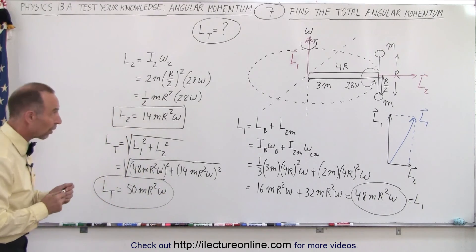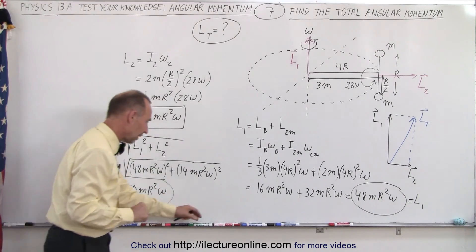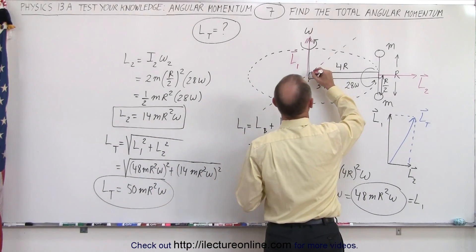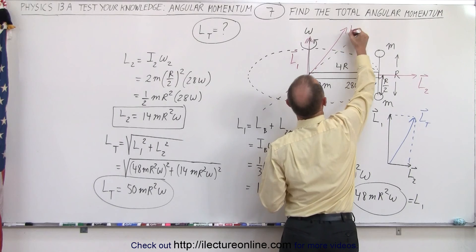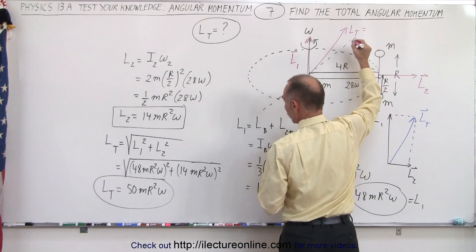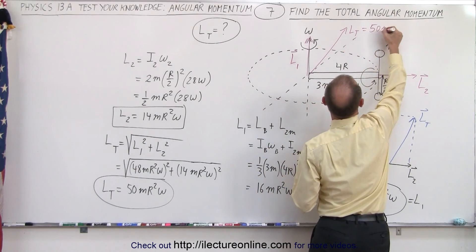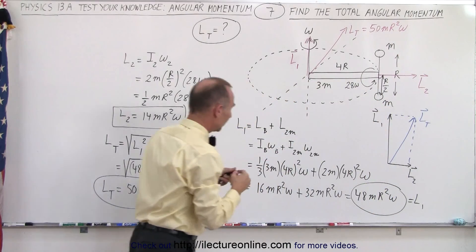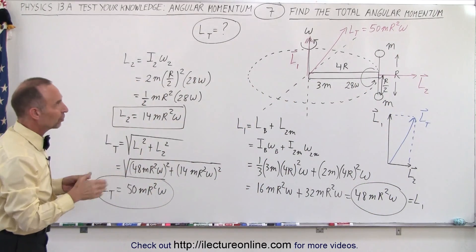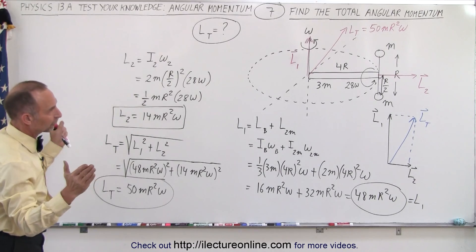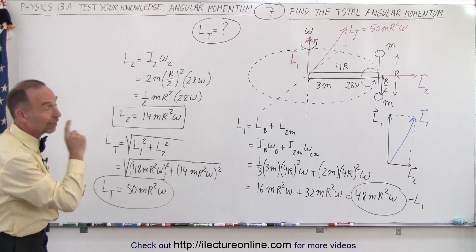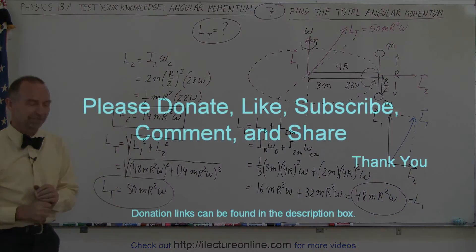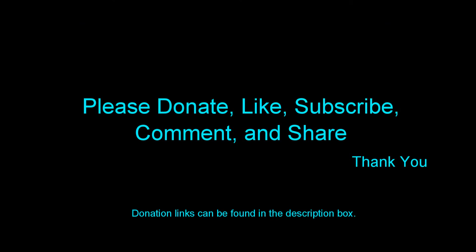So if we were to draw that on our graph, we have an angular momentum vector L_total equal to 50MR²ω. That is the direction and the magnitude of that angular momentum vector — the total angular momentum of that strange contraption. And that is how it's done.